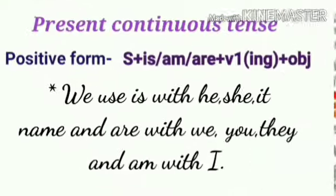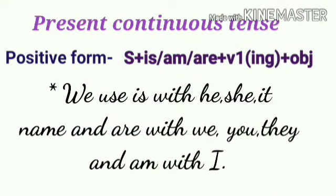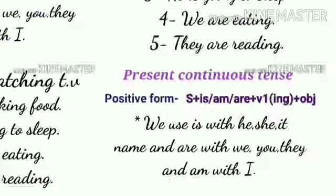Let's see the positive form of present continuous tense. Subject plus is/am/are plus V1 with -ing plus object. We use 'is' with he, she, it, and names; 'are' with we, you, they; and 'am' with I. Let's see some examples.